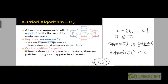In general, if the support of a set I is less than s, then the support for any superset of I will also be less than s, because the support for a superset has to be less than or equal to the support for the subset. So if item I does not appear in s baskets, then no pair that includes I can appear in s baskets.